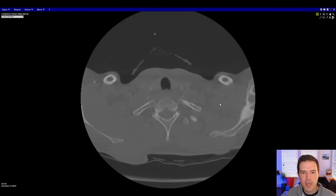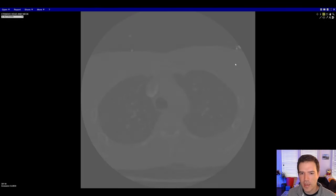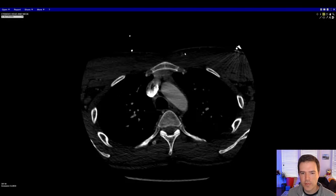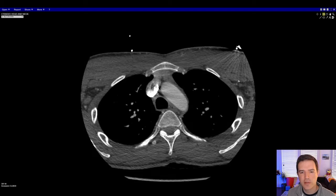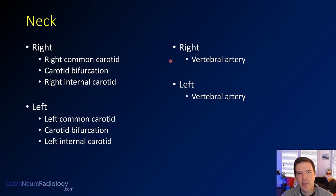Once we're happy with all of that, we're going to come back down to the origins of the vessels, window back out for vascular structures, and then start our vascular search. When we start with the neck, we're going to make four passes: first look at the right anterior structures — the common carotid and internal carotid — then the left anterior structures, then the right vertebral artery, and then the left vertebral artery. We'll make four passes through the neck starting from the bottom.